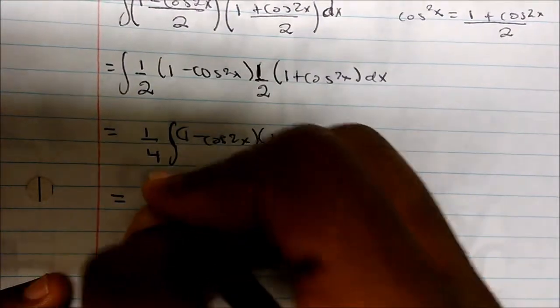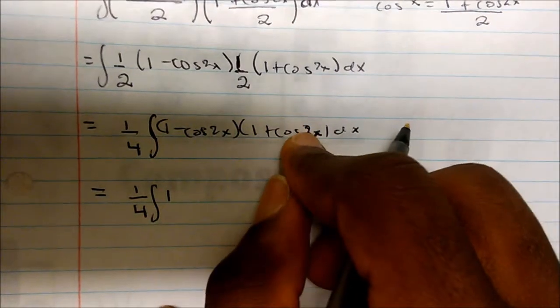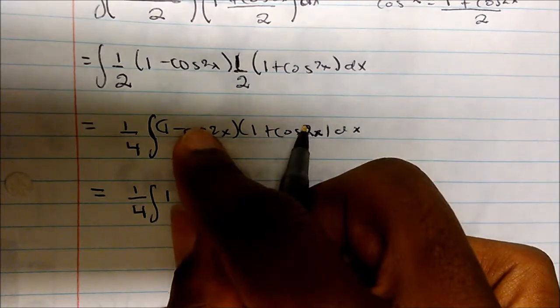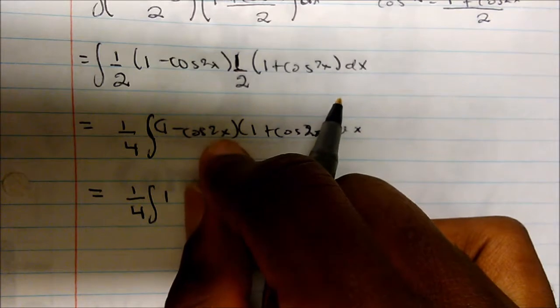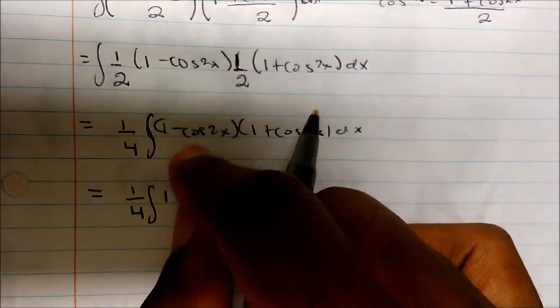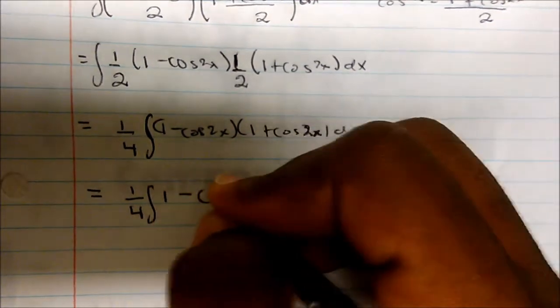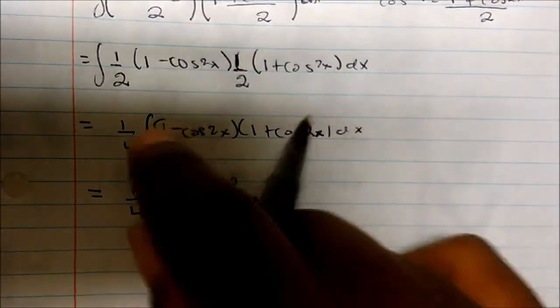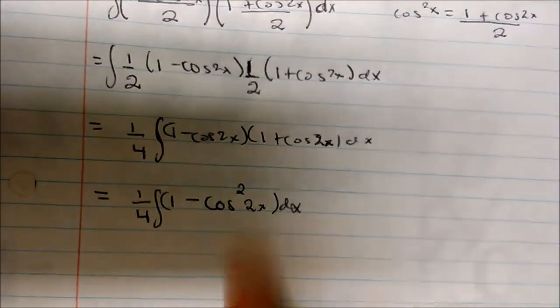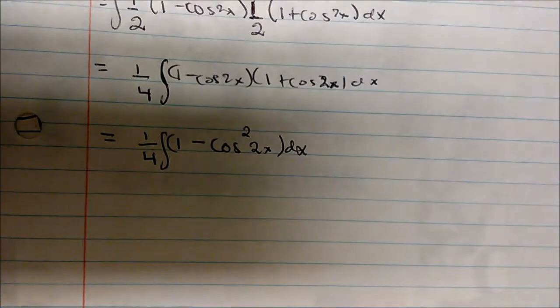If I distribute these together, I get 1. The middle terms — 1 times cosine 2x and negative cosine 2x — will cancel out, so the middle term is 0. The only thing left is 1 minus cosine squared of 2x, giving a negative cosine squared of 2x. So all I did was FOIL this out; the middle terms cancel and you get 1 minus cosine squared of 2x.